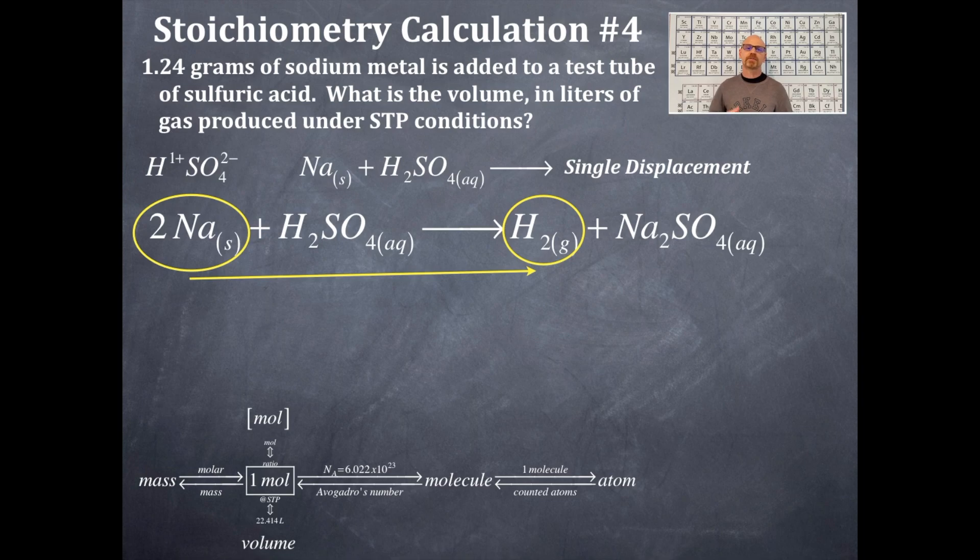Now I'm going to look at my flow chart and figure out what I have. I have 1.24 grams. That is a mass. I am going to go from grams of sodium to moles of sodium. That's using the molar mass. It's on your periodic table right there. And then I'm going to use a mole ratio to go from the moles of sodium to moles of hydrogen.